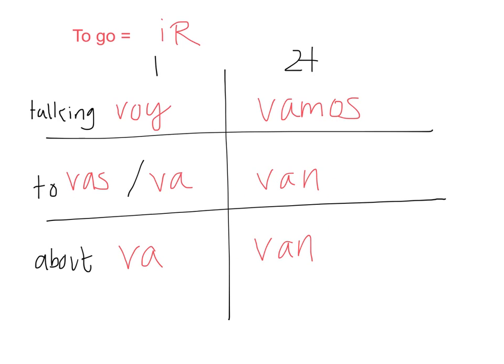So all of these are the verb form of ir conjugated. So these are the conjugations. So the conjugation is when we take the verb and we change it for each of the different subjects.